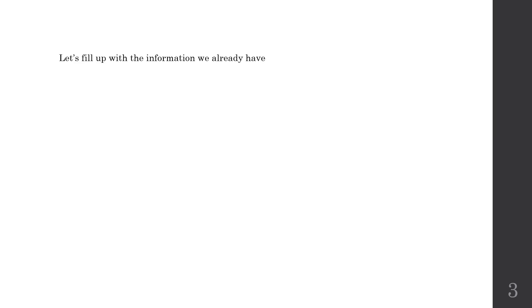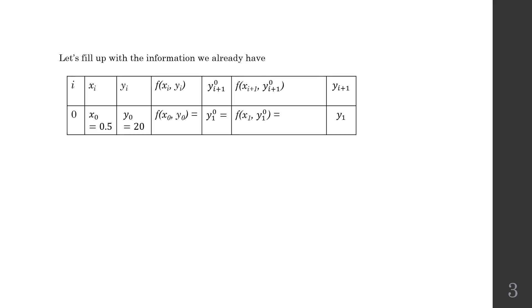Now let's fill up the table with the information that we might have. Actually, the information that we have comes from the initial value given in the question. So the first three columns: i0, x0 is equal to 0.5, and y0 is equal to 20.